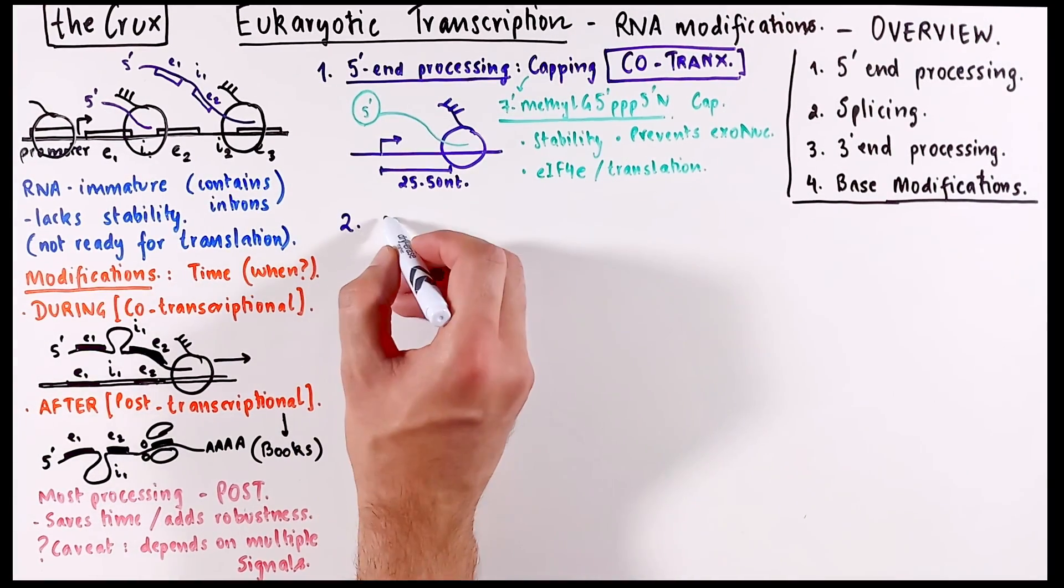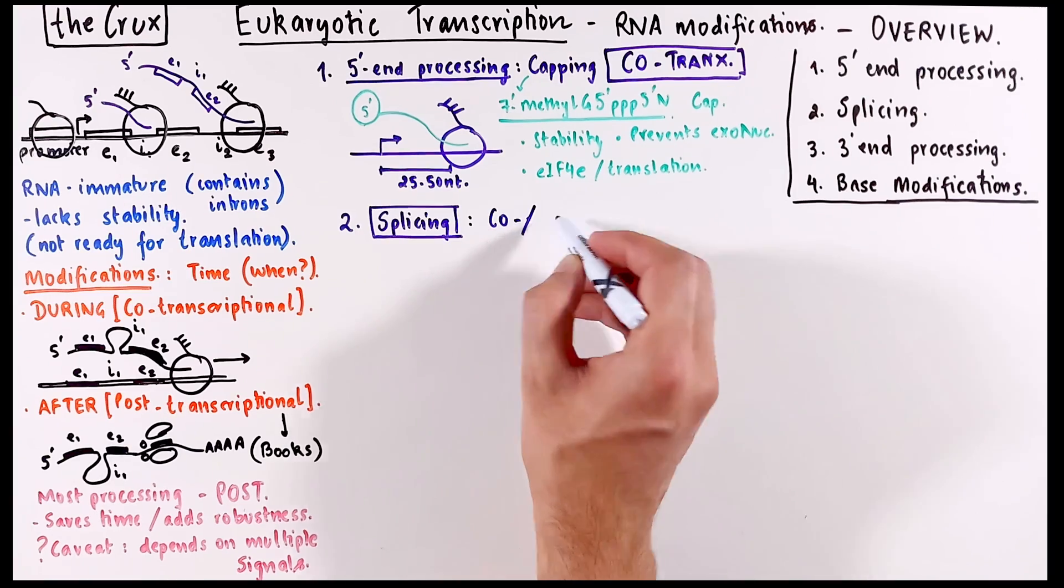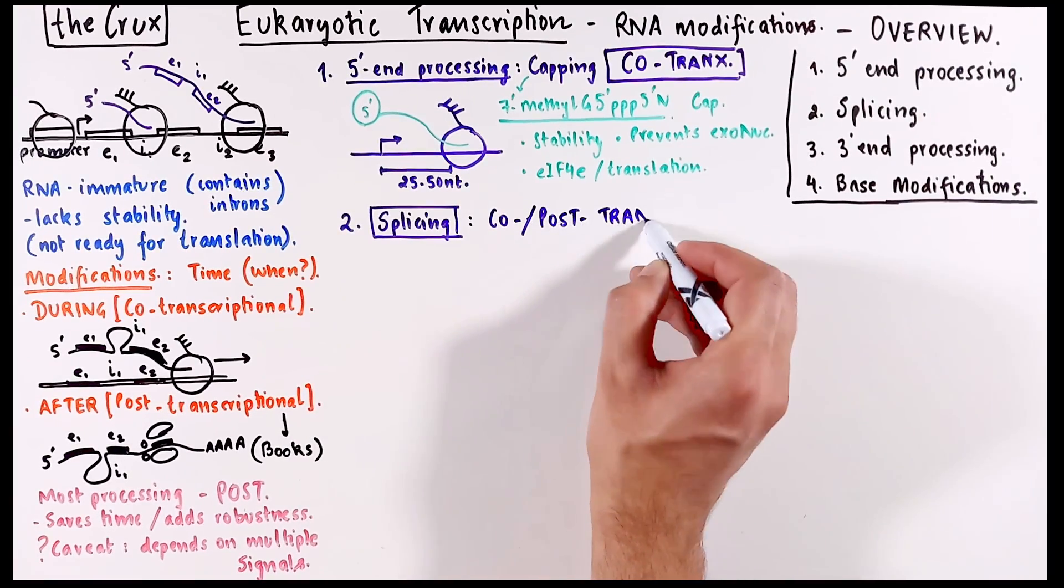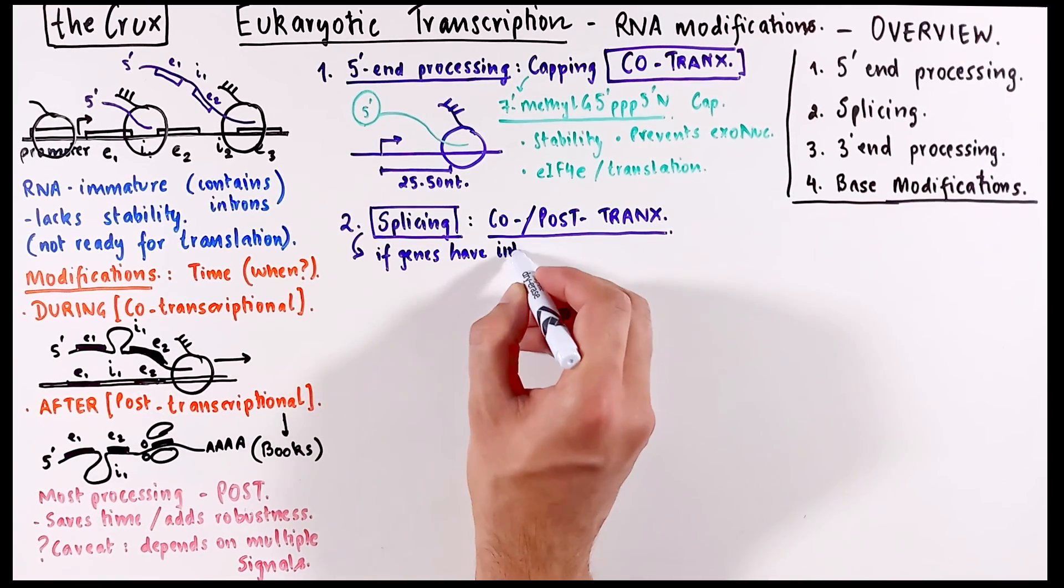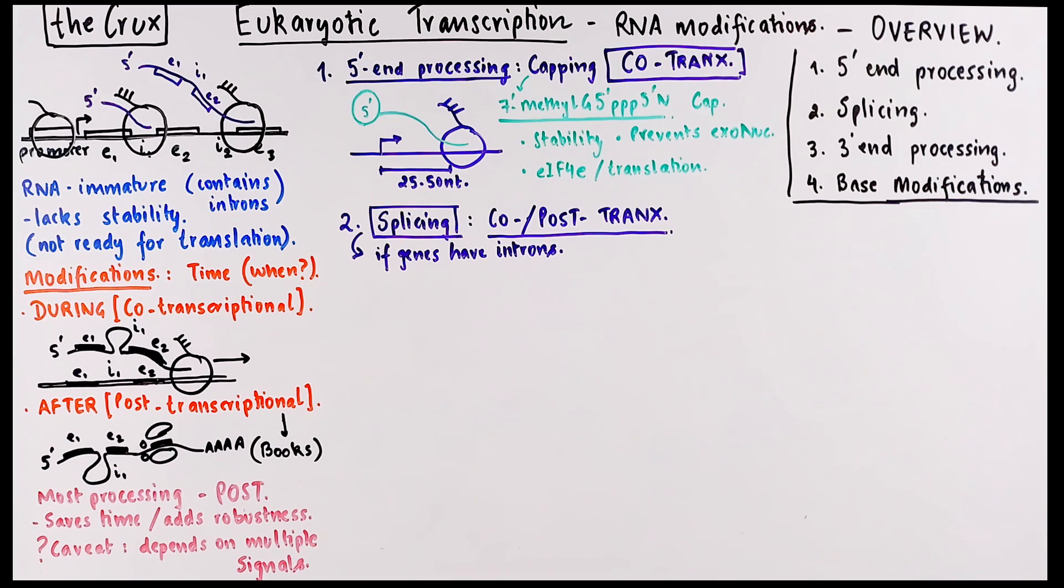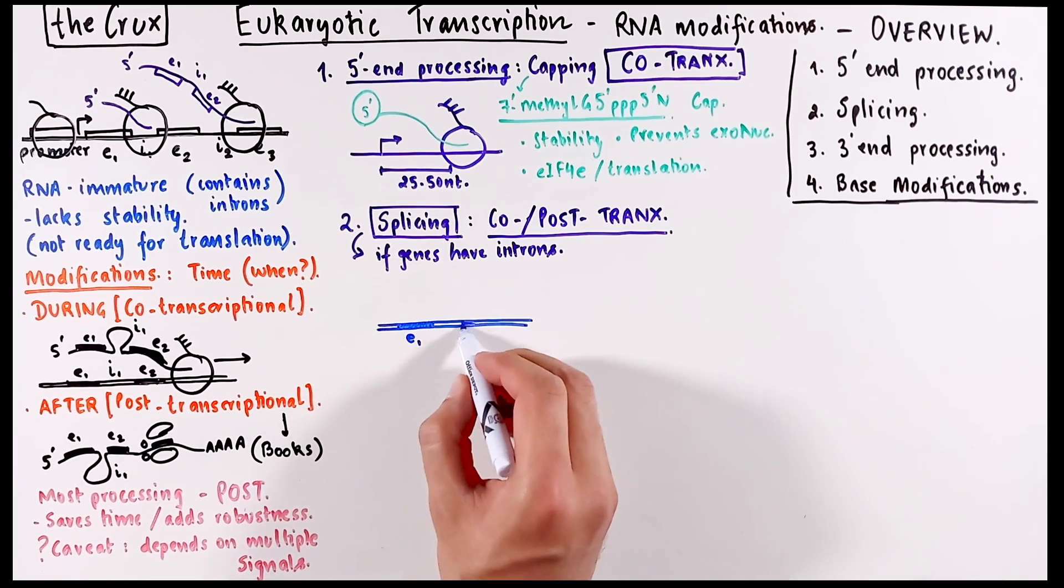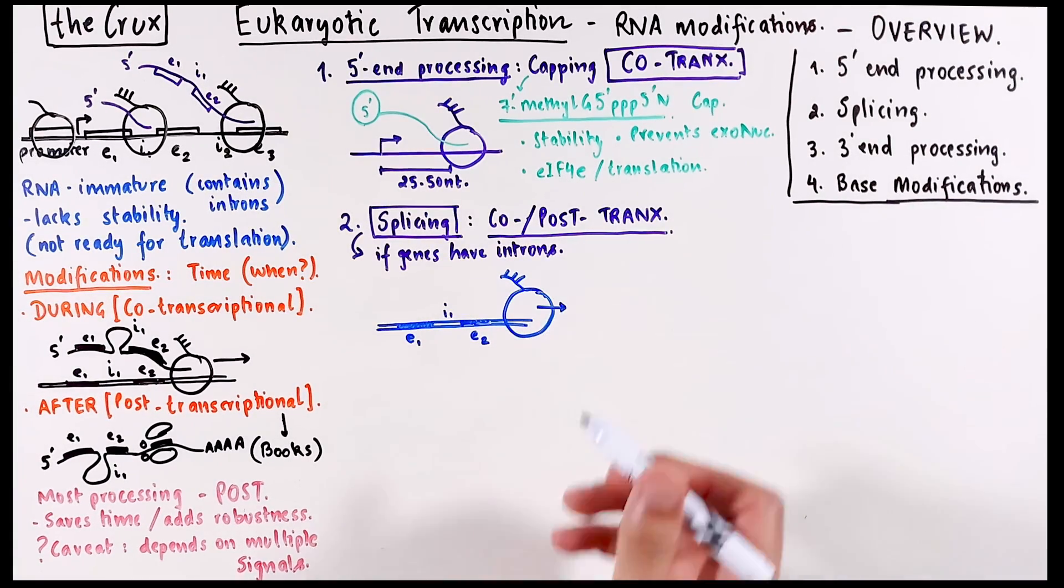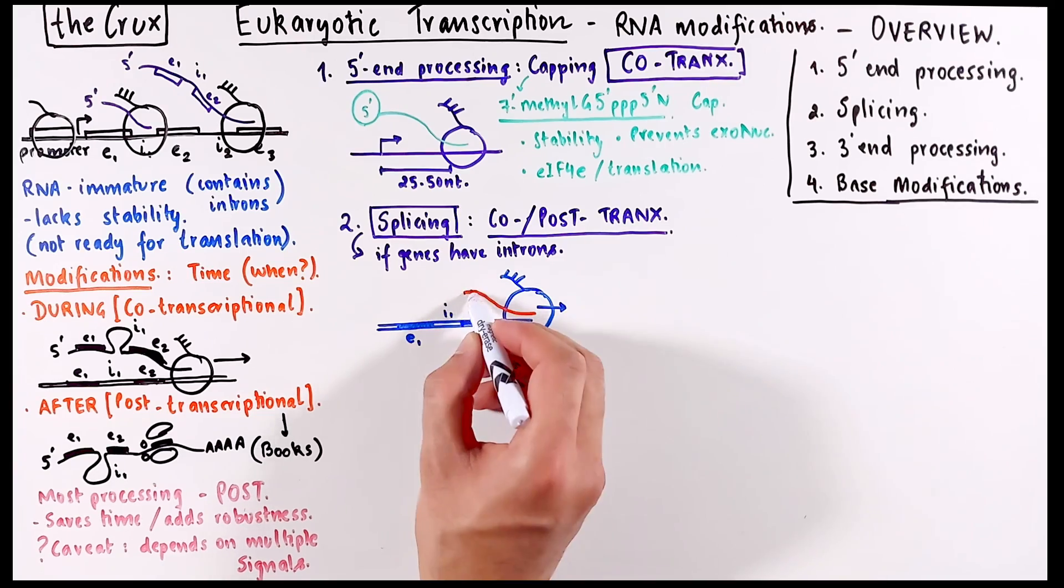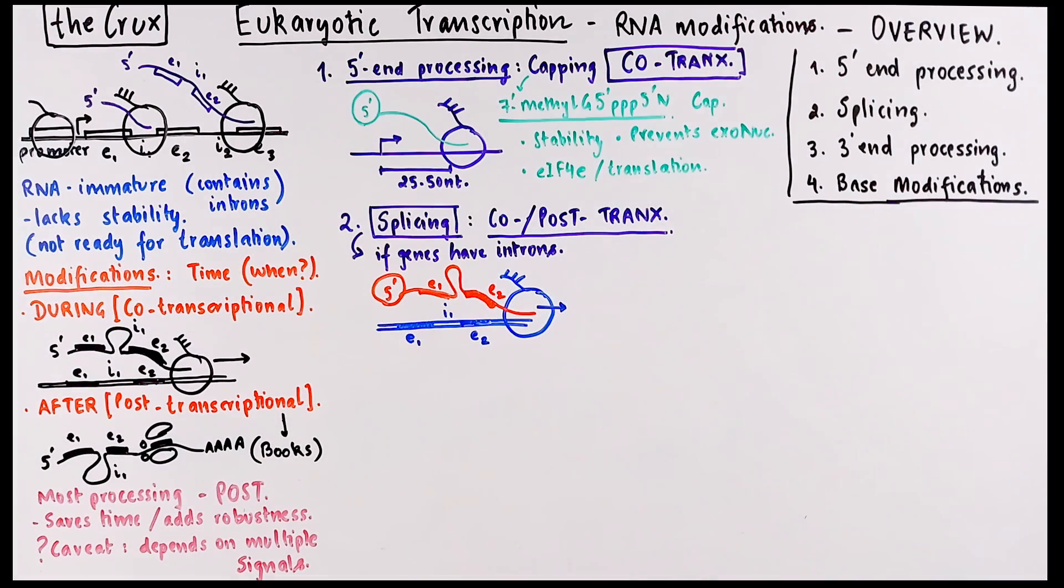Okay, so the second modification on the list is splicing, which is the process of removing the parts of RNA, which can either be introns or even in some specific cases, exons. And this can occur at both co- or post-transcriptional levels. Splicing occurs only if you have introns, because the signals for splicing are found in the introns itself. I've drawn this snapshot already, but just once more, the exons and introns are found in the fresh RNA. And the splicing aims to remove the introns through specific enzymes. And this is the canonical splicing. Other forms of splicing include alternative splicing, back splicing, and a couple of variations on these.